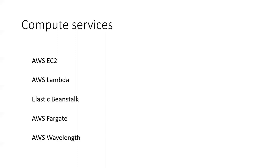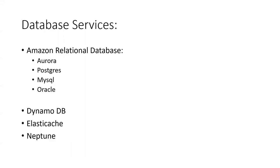AWS EC2 is the most common compute service. AWS Lambda is where we can run code directly without a server — it's totally serverless. We just select the language from a dropdown, choose Python, put the code in, and run it. EC2 is server-based while Lambda is serverless.